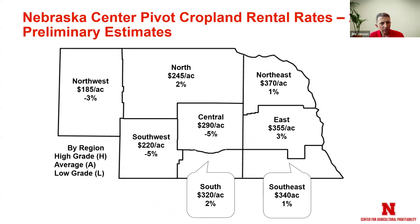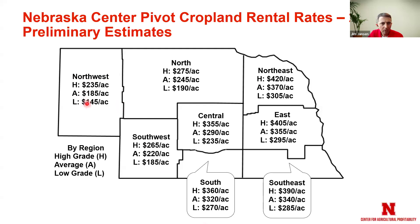In addition to dry land cropland, we also report on gravity irrigated as well as center pivot irrigated cropland. The breakdown for center pivot irrigated cropland shows that rates vary considerably across the state. These rates assume that the landlord owns the entire irrigation system — that would include the pivot, the pump, and the power unit. If the tenant is providing one of those components, more likely than not you would discount the cash rent to account for some of those differences.